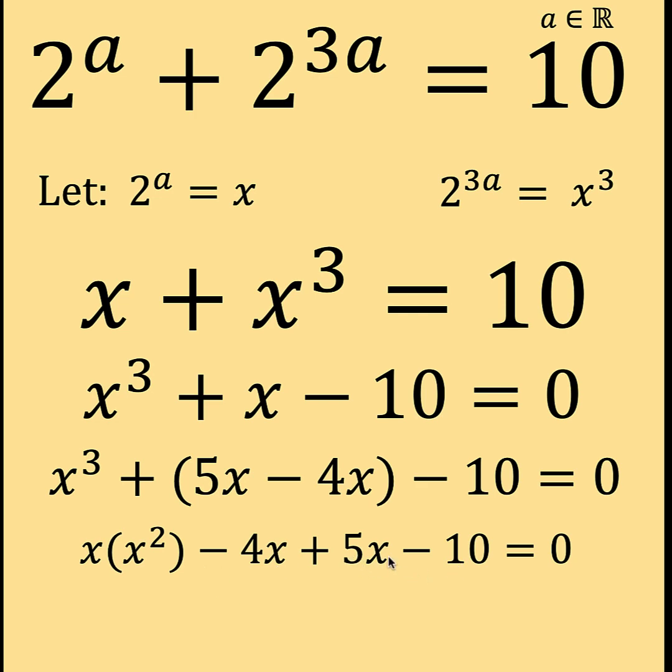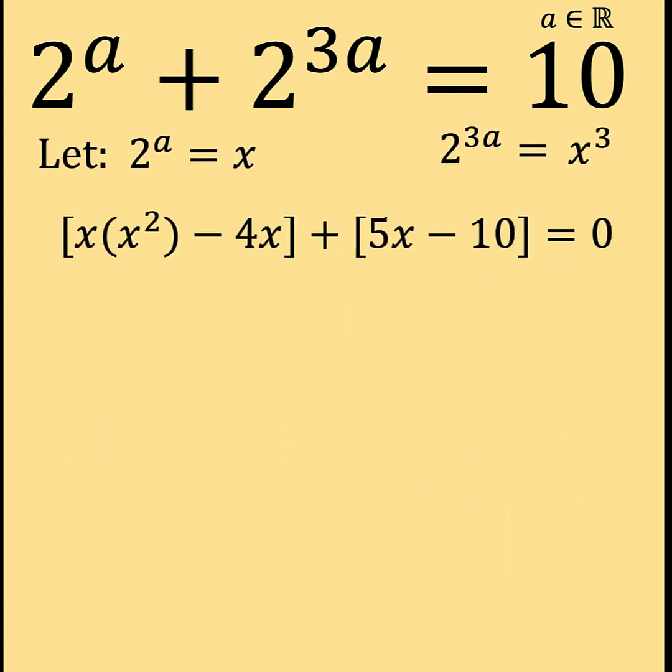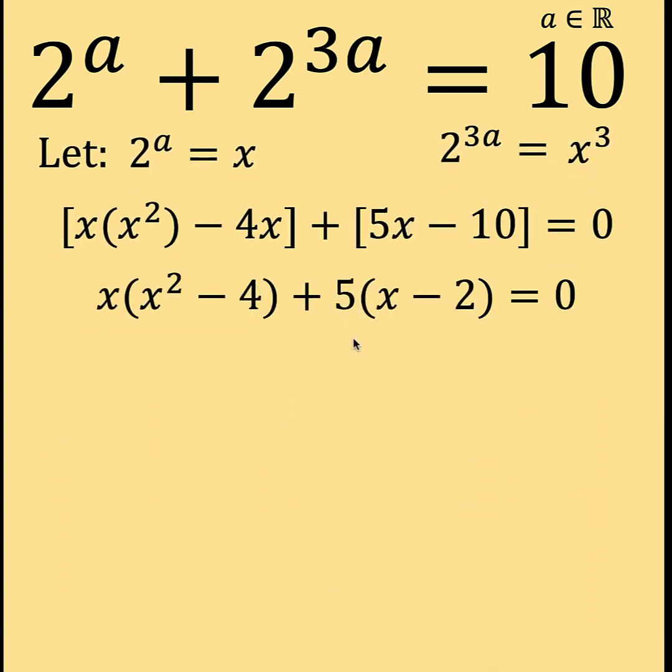Now, 5 is common between 5X and negative 10. X is common between X times X squared and 4X. So let's factor out those common factors. But first, we need to group together the first two terms and the last two terms this way. Then, factoring out the common factor X and the common factor 5, we arrive at this. Notice that we have here difference of two squares because 4 is also a perfect square. We can factor this out as the product of the sum and difference of the square root of X squared and the square root of 4, which is 2. Copy X, factor X squared minus 4X as the product of X plus 2 times X minus 2 and copy all the rest.